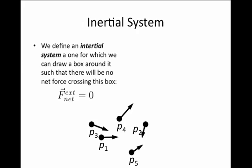An inertial system is one for which we can draw a box around the system and be sure that there will be no net external force crossing the boundaries of this box. So an inertial system is defined by the boundary that we have to draw around it and how inclusive we have to be in order to find a system for which there is no net external force acting on the system.